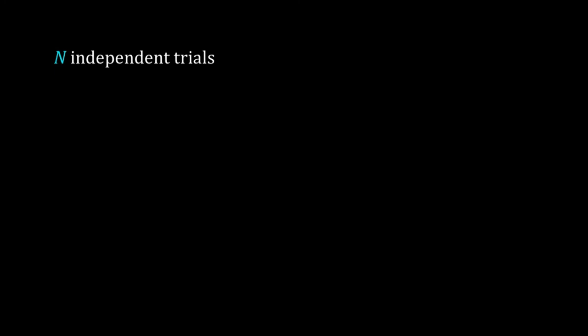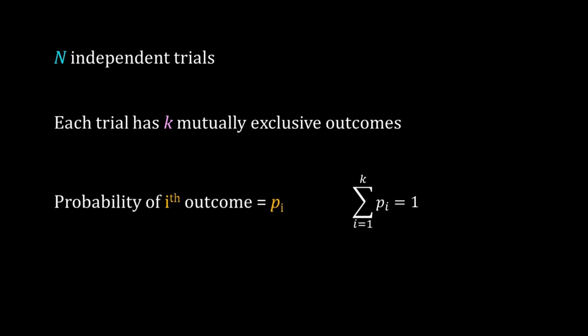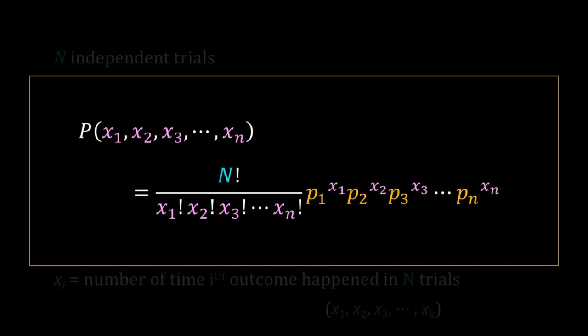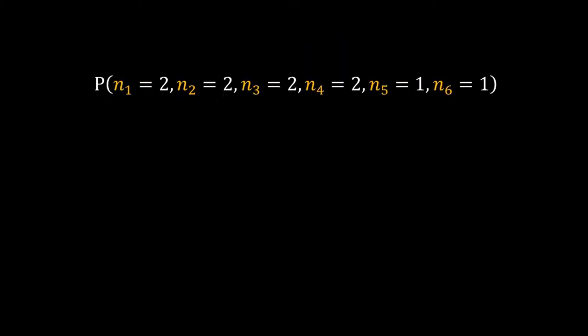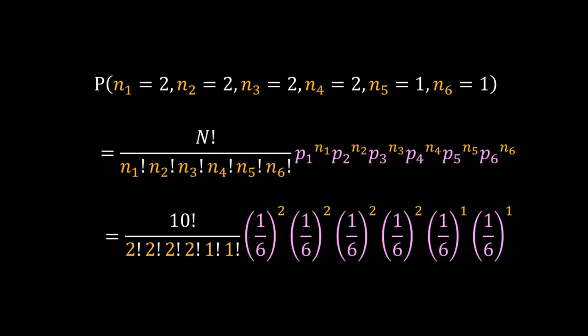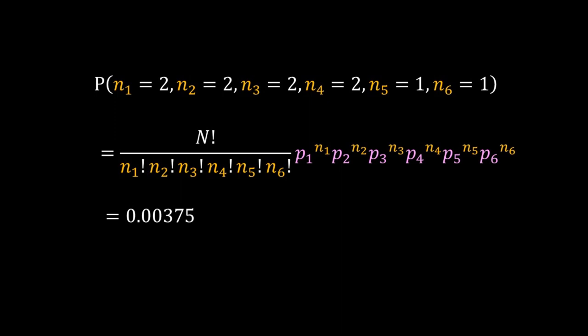We have n independent trials, each with k mutually exclusive outcomes. In the die throw, there are six outcomes that are mutually exclusive — you cannot get two faces up at the same time. Let the probability of the i-th outcome be p_i, and x_i be the number of times the i-th outcome occurs in n trials. The PMF of the multinomial distribution gives the probability of observing that set of outcomes. If all sides of the die have equal probability, the probability of getting one through four twice each and five and six once each is 0.00375.